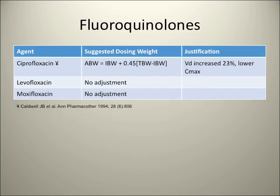For quinolones, I found only one article regarding dosing of ciprofloxacin in obese patients. Volume of distribution increased by about 23% and C-max was lower, so we need to increase the dose. The dose is adjusted using ideal body weight with a correction factor of 0.45 — the highest correction factor we've seen so far, compared to 0.4 for aminoglycosides and 0.3 for cephalosporins. For levofloxacin and moxifloxacin, we have no information regarding dosing.